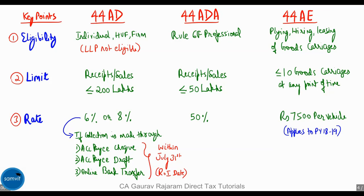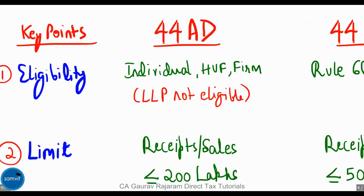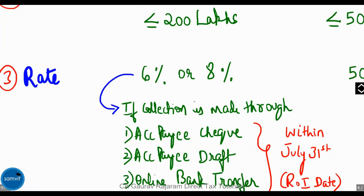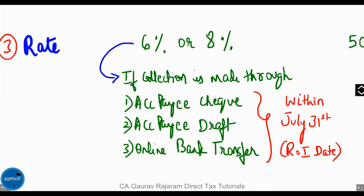There are three deemed income sections we'll be covering in this video. The first one is Section 44AD. Who is eligible? Any individual, HUF, or a firm — however, an LLP is not eligible. The limit under Section 44AD is that receipts or sales should not exceed ₹200 lakhs. The rate of income is six percent or eight percent of sales or turnover. Six percent is applicable if the collection is made through an account payee cheque, account payee draft, or an online bank transfer on or before the return of income due date.